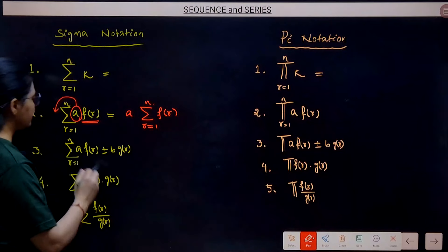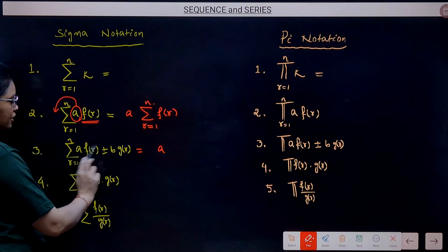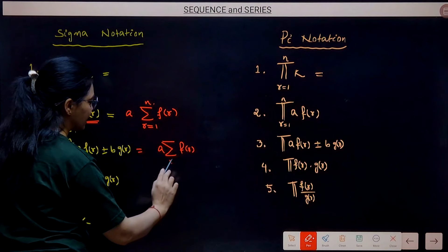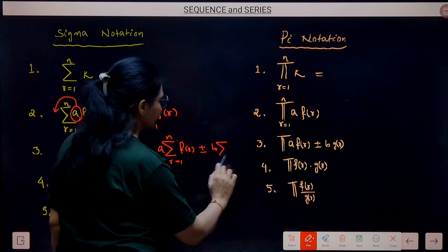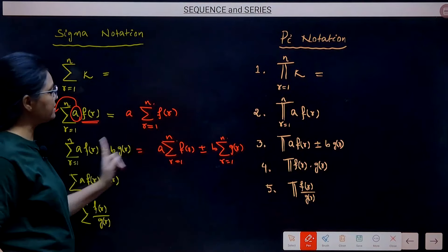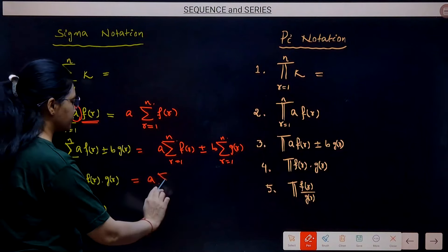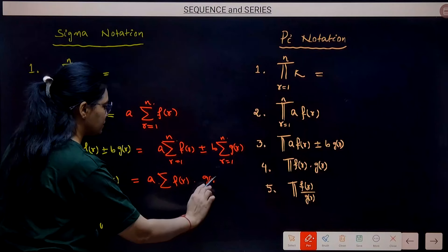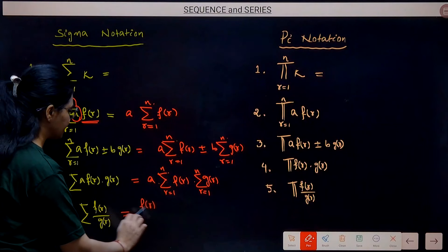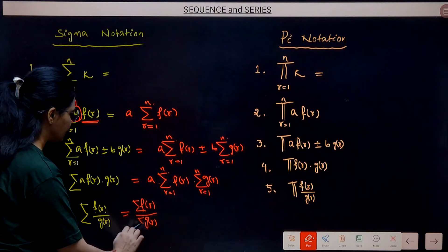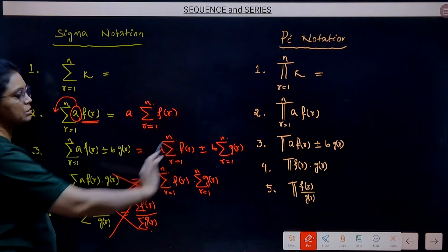If we have sigma of [A·F(r) ± B·G(r)], we can separate it as A·sigma(F(r)) ± B·sigma(G(r)), moving constants outside. However, do NOT do this for multiplication or division — this is wrong. Why? In sigma of [F(r)·G(r)], each term is F(1)·G(1) + F(2)·G(2) + ..., but if you separate them as sigma(F(r)) · sigma(G(r)), you get cross terms like F(1)·G(2), which do not exist in the original sum. So for multiplication/division, simplify the term itself and sum it as-is.